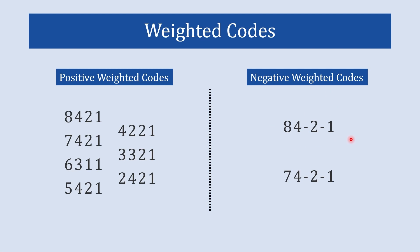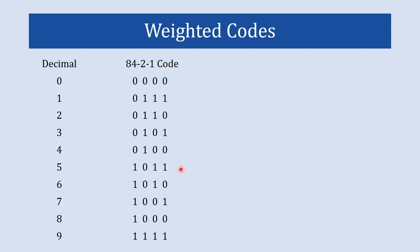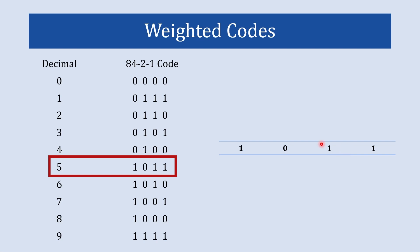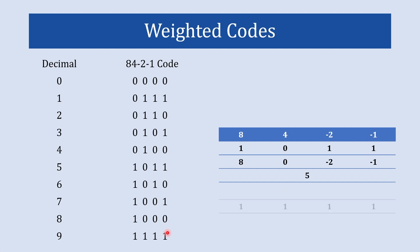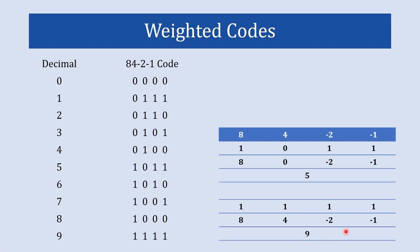Let us take an example of the 84-2-1 code. For the binary number 1011, placing the weights 8, 4, -2, -1: 8×1=8, 4×0=0, -2×1=-2, -1×1=-1. So 8+0-2-1 gives us 5. The representation of decimal 5 in 84-2-1 code is 1011. For 1111: 8+4-2-1=9. This is how negative weighted codes are constructed.